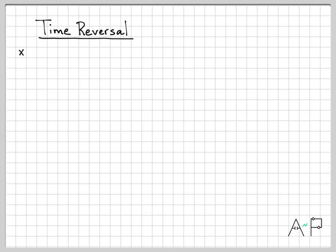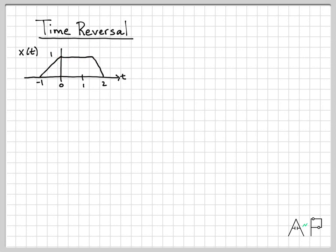Let's do a specific example. Say I have a signal x of t that starts at time minus 1 and linearly ramps up to 1. Then it holds that value for a bit, and then at about 1 and a half it starts linearly decreasing, going down to a value of 0 at time 2. That's our starting signal x of t. We're going to create a signal y of t that is the time reversed version of x of t — picture taking this signal and spinning it about the t equals 0 axis.